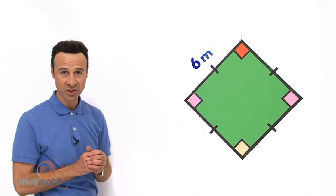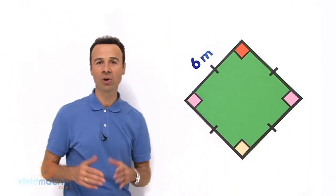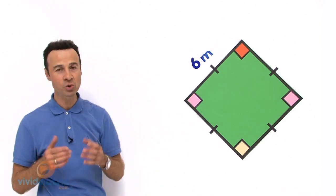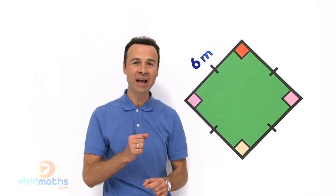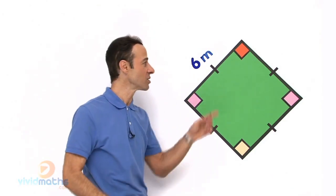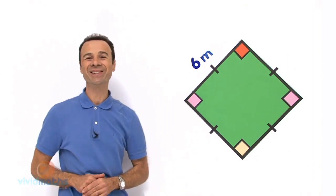Well, the first thing that tells us it's a square is these little right angle symbols on each corner. That means they are all at 90 degrees, so that is partly attributing to the fact that it is a square. But the symbol that really nails it and shows us that it is in fact a square is these little lines right here, and they mean that all the dimensions are exactly the same.